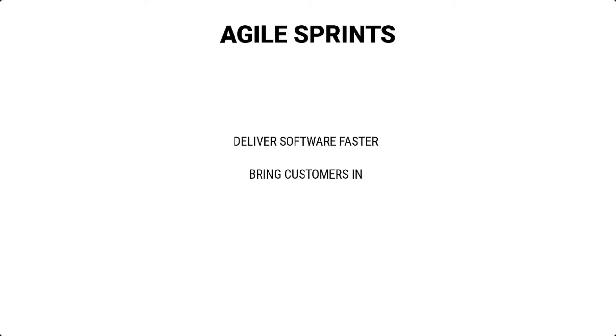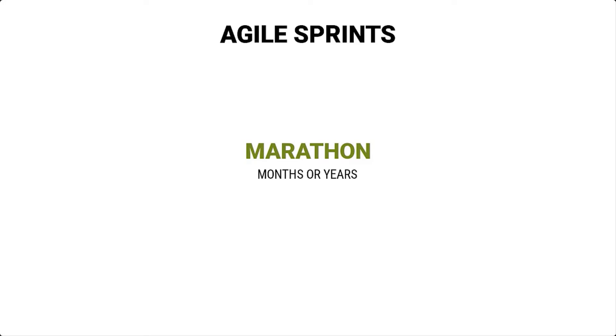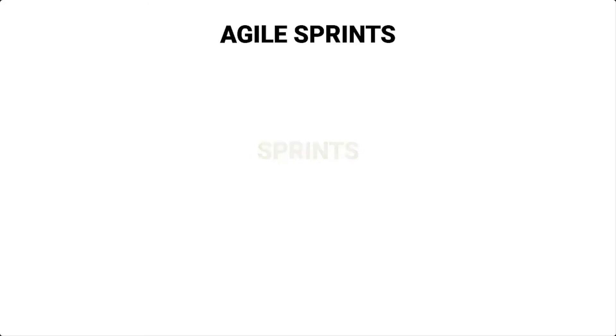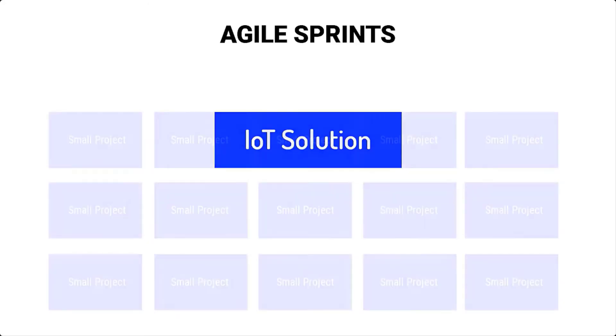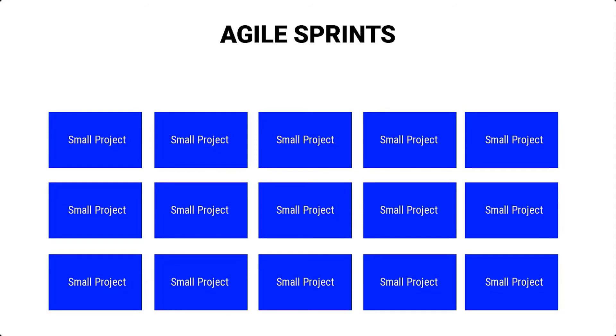Earlier in this video, I mentioned how developers would work for months or even years before a software release, and that everyone agreed we needed to deliver software faster and bring customers in to regularly sync up and make sure what we are building aligns with what they need. So the creators of the Agile Manifesto decided that instead of this being a marathon taking months or years, we're going to do a series of sprints — short iterations. The Agile sprint concept enables you to break down an IoT solution into small, easily constrained projects in short time horizons, contrary to longer, open-ended executions that can cause project failures.